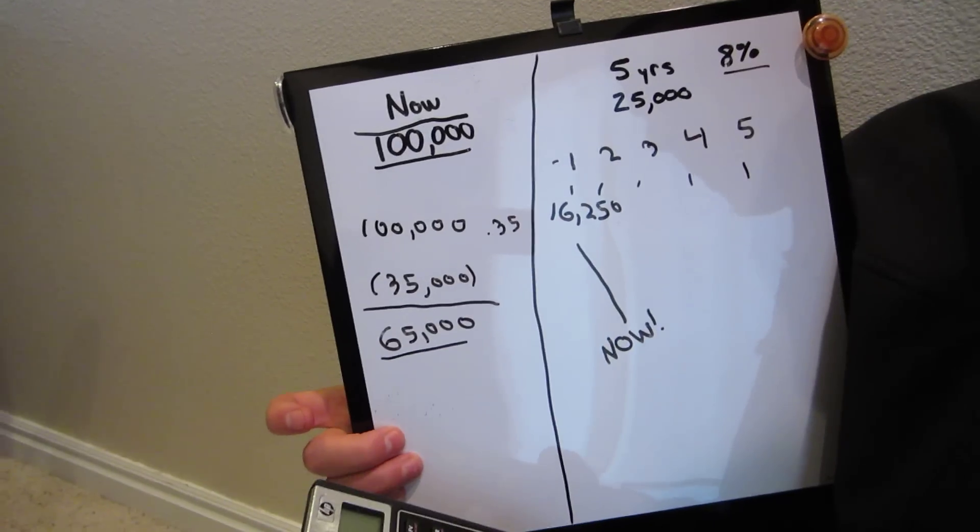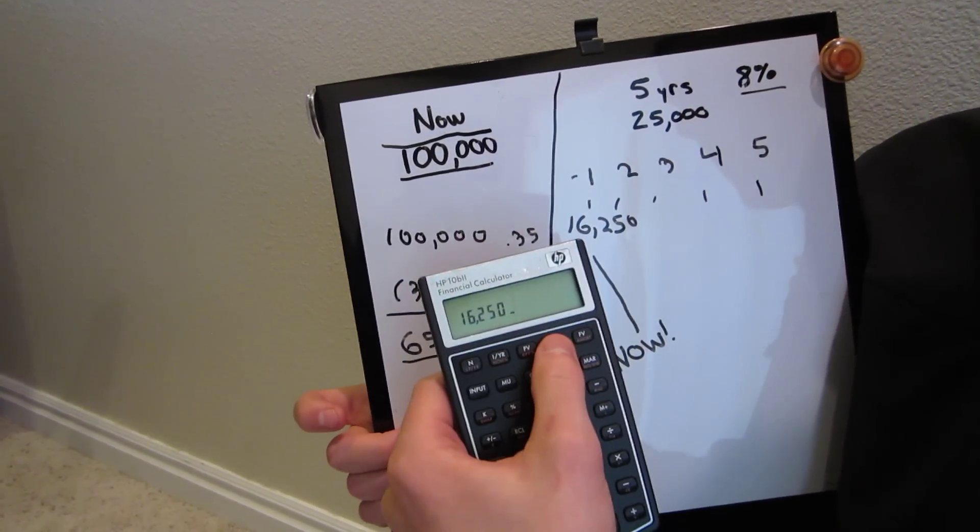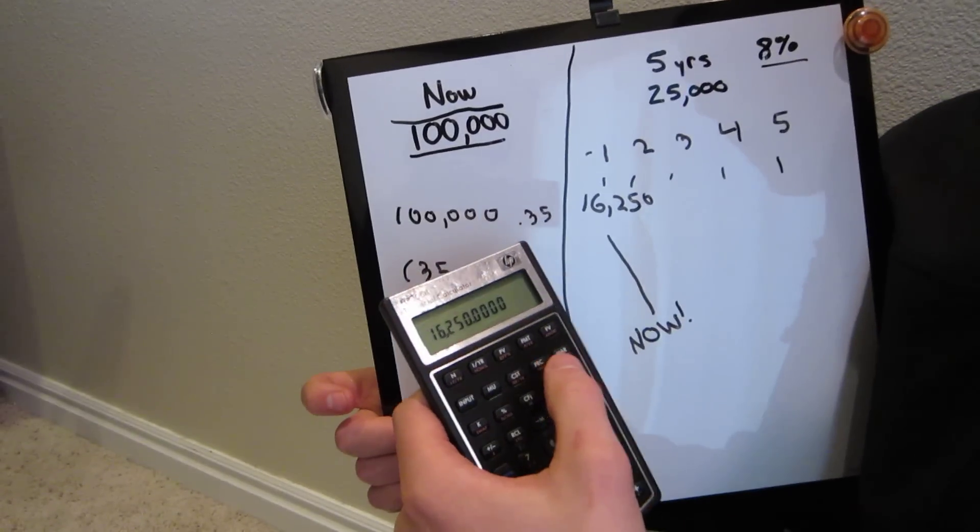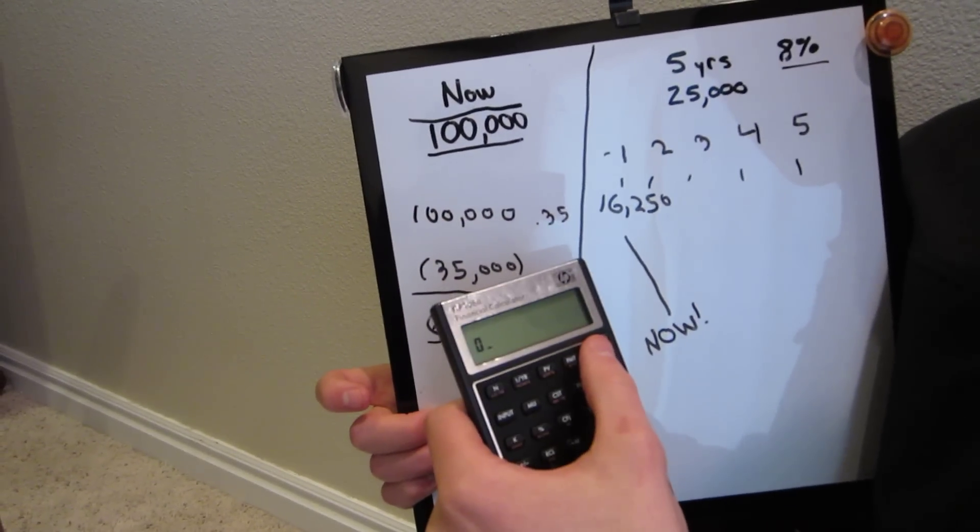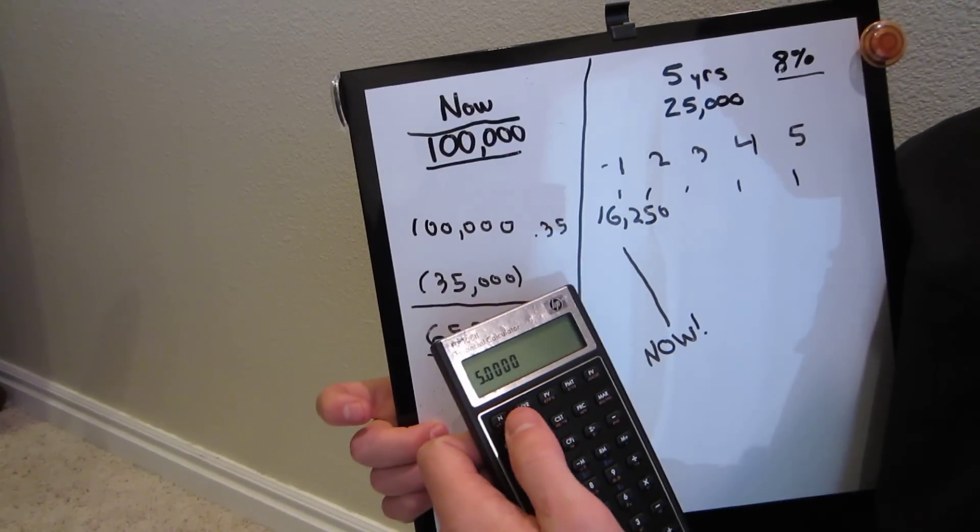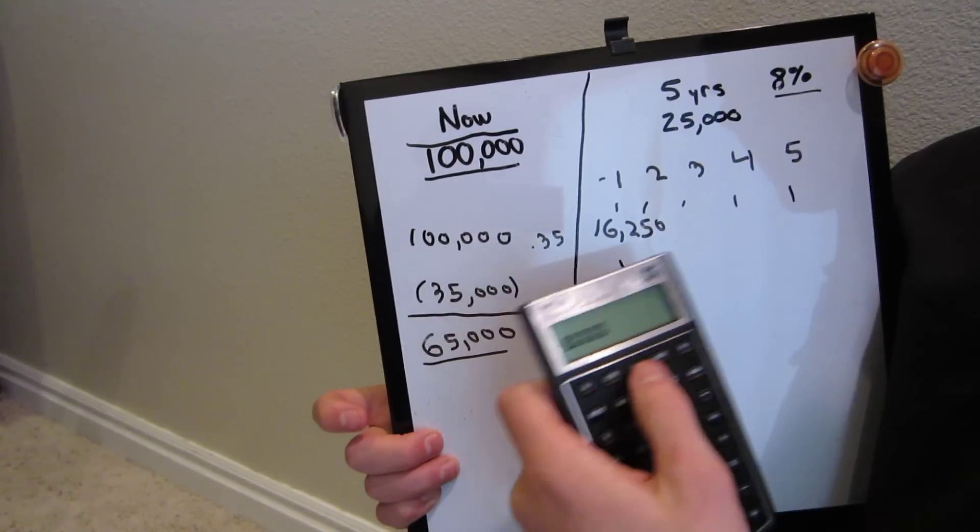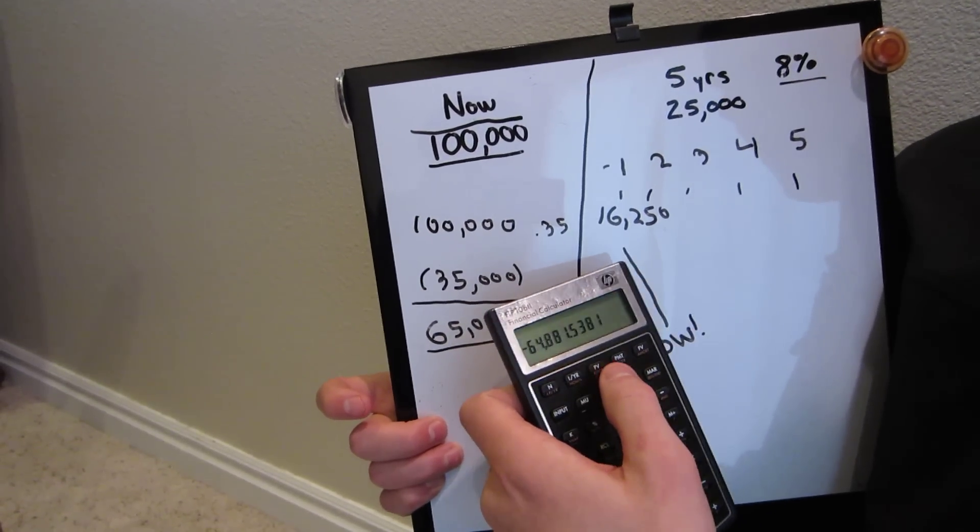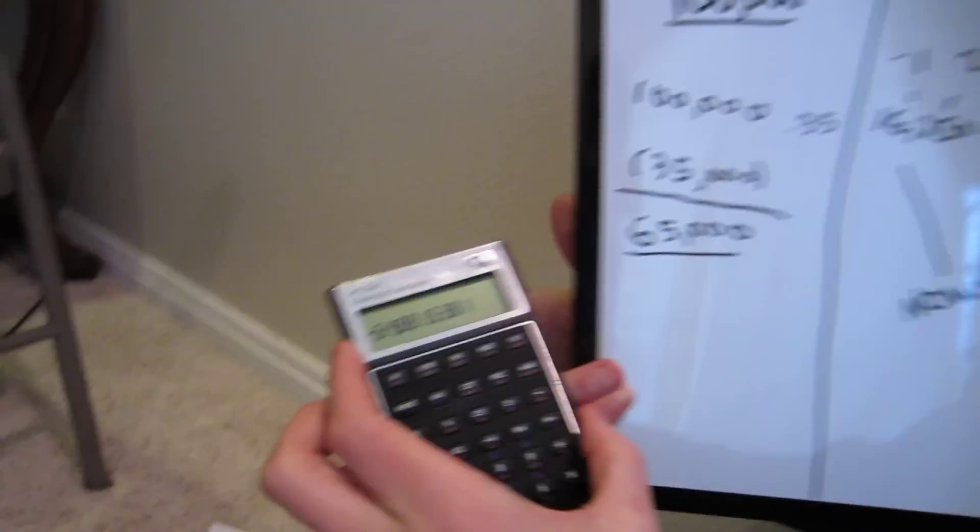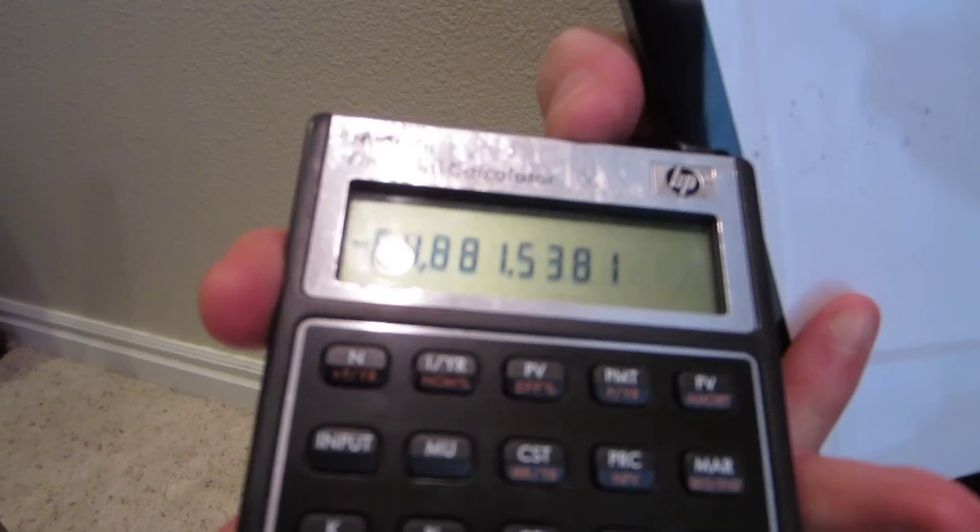And all we have to do is put in the $16,250 as a payment, future value of 0, because they're paying it to you all, 5 for N, because it's going to be 5 years, and we set an 8% discount rate. And then we're going to press our present value, and it'll give us that. It's going to be $64,882 rounded.